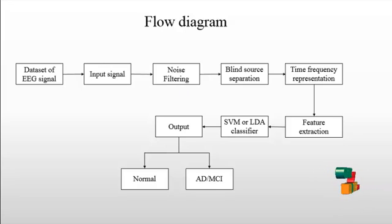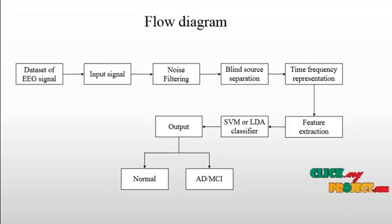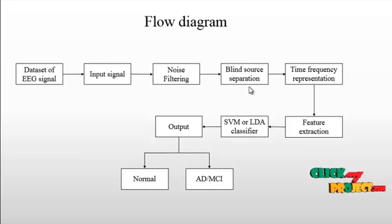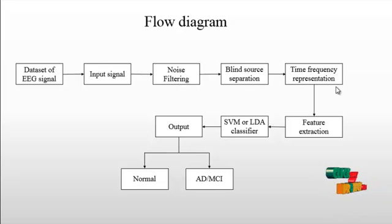Noise removal from the raw EEG signal is performed. Preprocessing of the EEG signal involves amplification and filtering. To obtain a more enhanced EEG signal, various techniques such as blind source separation (BSS) and independent component analysis (ICA) are used, followed by time-frequency representation.